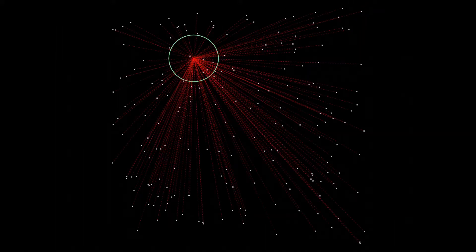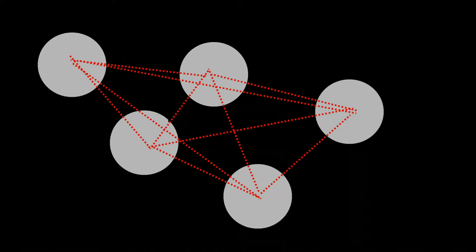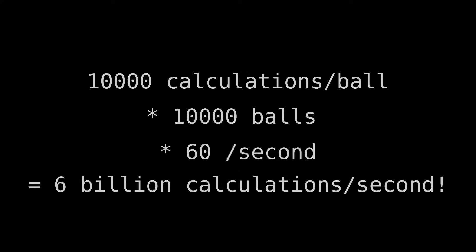The problem is we need to do this for every single point, and it doesn't seem bad until you realize how often you might need to make these calculations. Let's say you're running a bouncy ball simulation with 10,000 balls at 60 FPS, and you need to figure out which bouncy balls are colliding by seeing whether each ball is within the radius of every other ball. With this naive approach, that's 10,000 by 10,000 by 60 — 6 billion calculations per second.